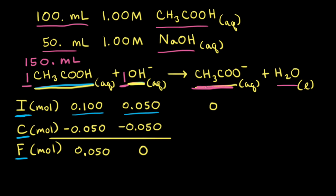For the acetate anion, the coefficient in the balanced equation is one. Therefore, if we're losing 0.050 on the left side of the equation, we're going to be gaining 0.050 on the right side. So when the reaction goes to completion, we have 0.050 moles of the acetate anion.